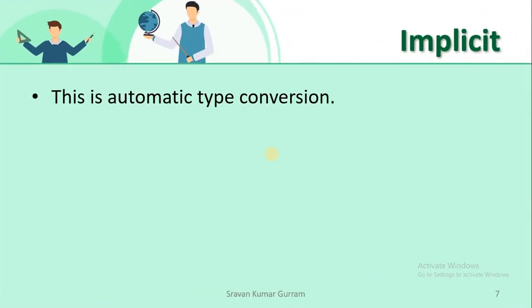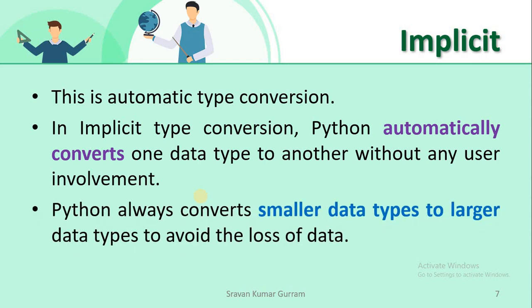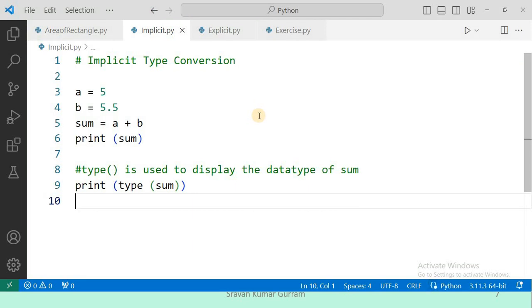In implicit type conversion, it is automatic type conversion. As a developer, you do not need to write any extra code to implement it. Python automatically converts one data type to another data type without any user involvement. Python always converts smaller data types to larger data types to avoid the loss of data. If we do the reverse, there is a chance of losing data. This is a common rule in all programming languages.